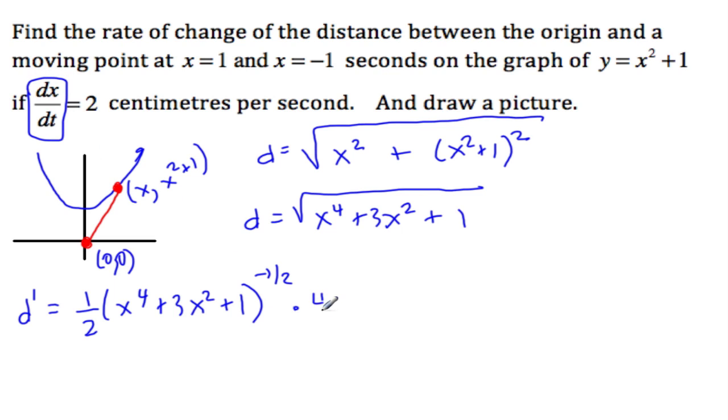So this will be 4x³ · dx/dt + 6x · dx/dt. This is all from the chain rule. Bring down the 4, keep the inside alone, to the third power, times the derivative of the inside. This is from the chain rule. And then plus 0.